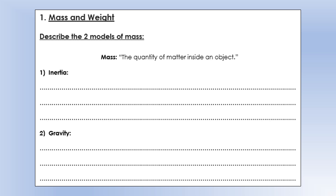Starting with mass and weight: when we say mass, the general physics definition is that mass is the quantity of matter inside an object. That doesn't really tell you an awful lot about what mass really means, so I'm going to break it into two categories because mass has influence in two areas of physics.